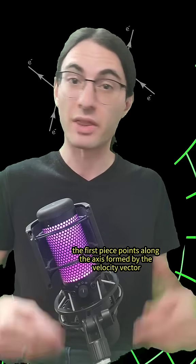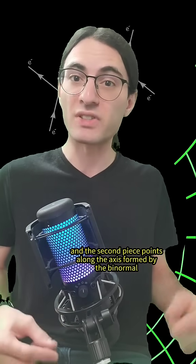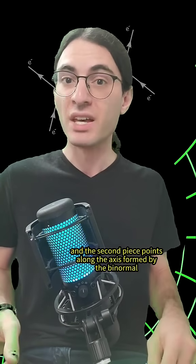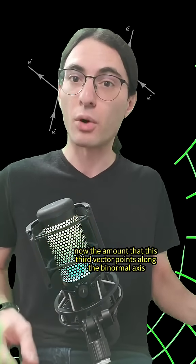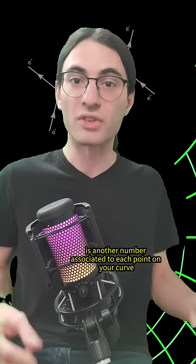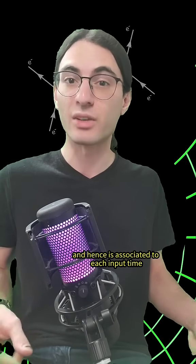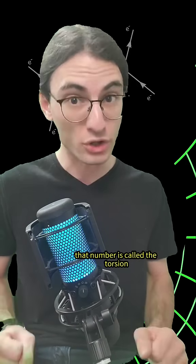The first piece points along the axis formed by the velocity vector, and the second piece points along the axis formed by the binormal. Now, the amount that this third vector points along the binormal axis is another number associated to each point on your curve, and hence is associated to each input time. That number is called the torsion.